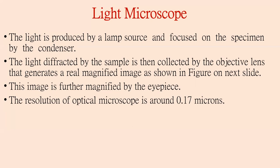Light microscopy uses electromagnetic radiation to achieve magnification. In light microscopy, we use glass for bending and focusing light. Refraction, that is the bending of light, is the manifestation of different light velocities in different materials. We use light as a lamp source, focused on the specimen by the condenser lens. The light diffracted by the sample is then collected by the objective lens, generating a real-time magnified image of the specimen.